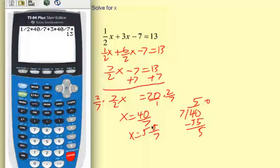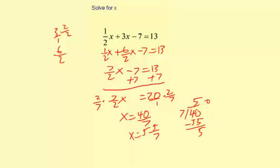Perfect. So now I know my answer works. 5 and 5/7, or 40/7, is the correct answer. So I'm going to go ahead and circle my 5 and 5/7.